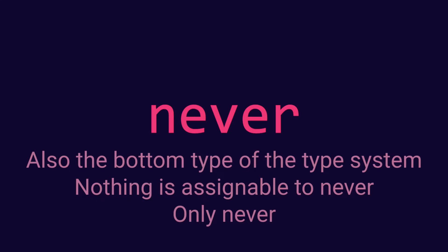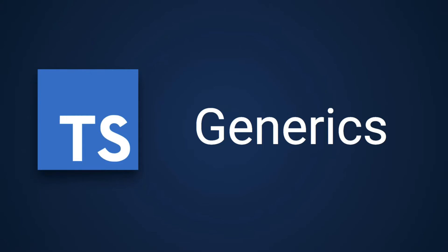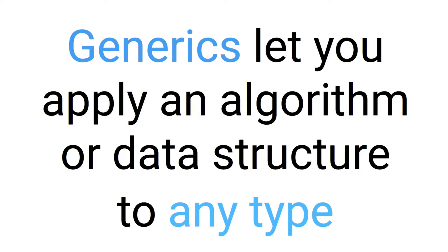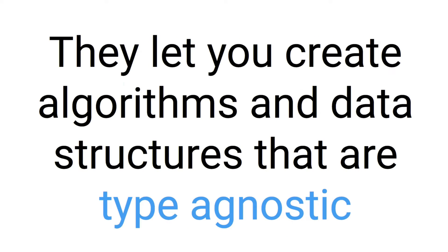Now we have generics. Generics is super useful in a type system. Generics lets you apply an algorithm or data structure to any type — they let you create algorithms and data structures that are type-agnostic.